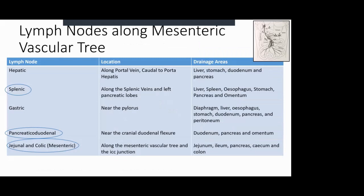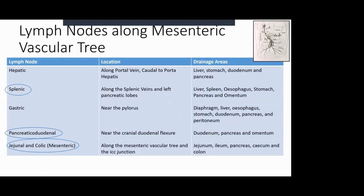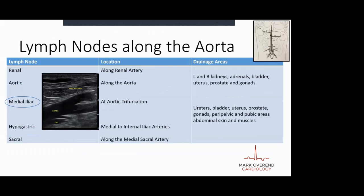I've circled the ones we see most easily and most commonly: the splenic, which you would find along the splenic veins and left pancreatic lobes; the pancreaticoduodenal, which you find near the caudal duodenal flexure; and the mesenteric lymph nodes - the jejunal and colic - which you find along the mesenteric vascular tree. I call this the 'middle of the middle.' Along the aorta, the main ones you'd expect to see fairly easily are the medial iliac lymph nodes. I find the aorta and slide caudally to the trifurcation, looking around that trifurcation point for lymph nodes.